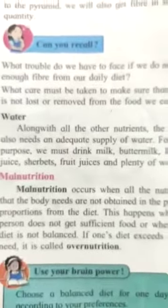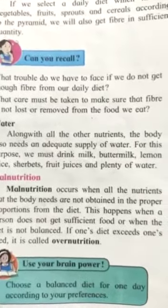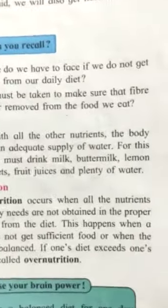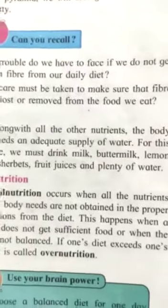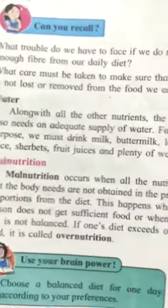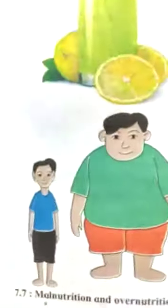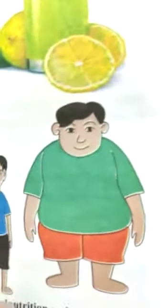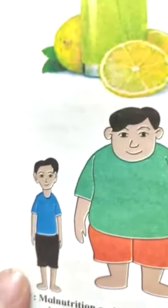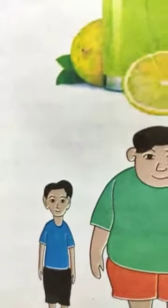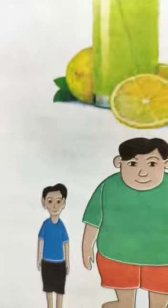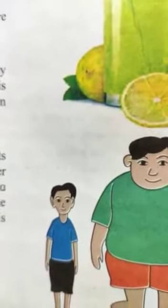Malnutrition means when one of the nutrients is less or nutrients are in excess. There is overnutrition and undernutrition. Very thin is undernutrition; very fat is overnutrition. Both come under malnutrition, which means lack of proper nutrients.